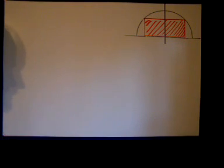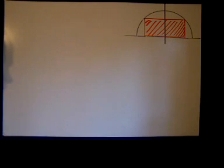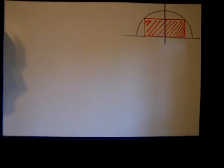Good morning. Today we're going to work an optimization problem for Calculus 1. I'll read the problem: Find the dimensions of the rectangle of maximum area that can be inscribed in a semicircle of radius 4.